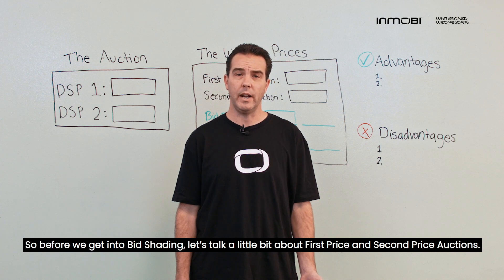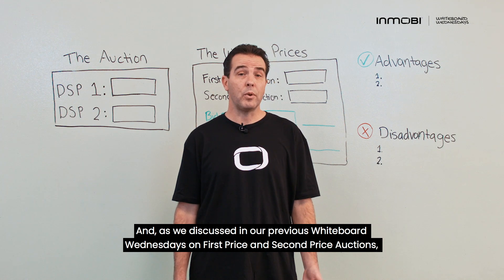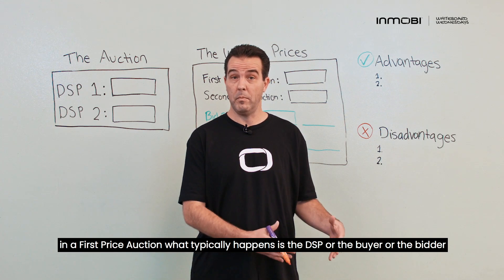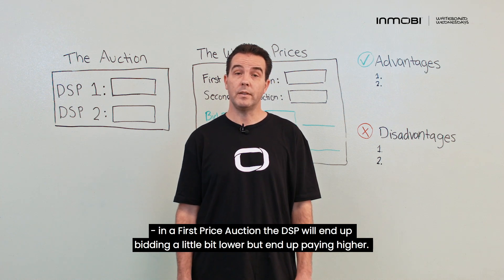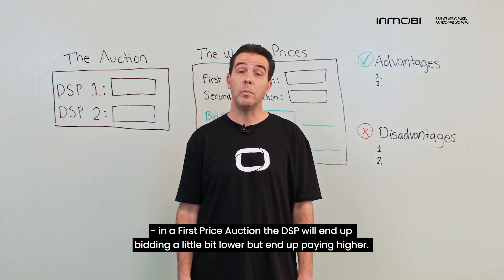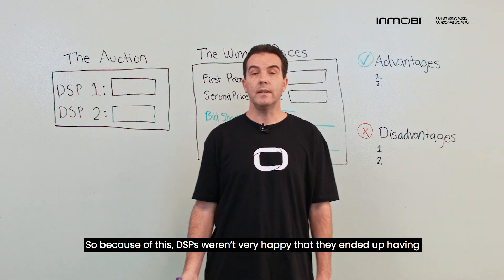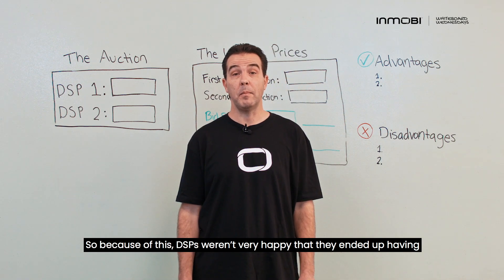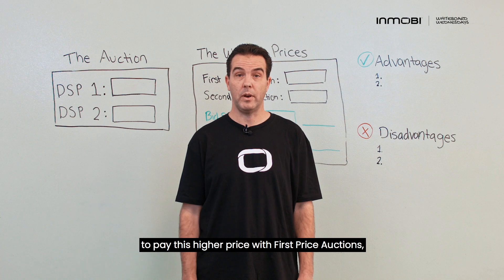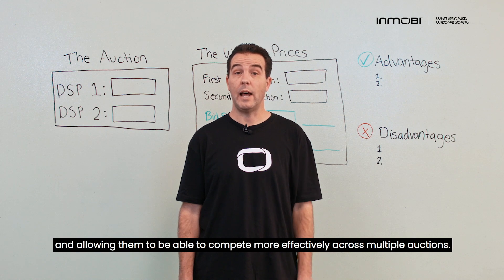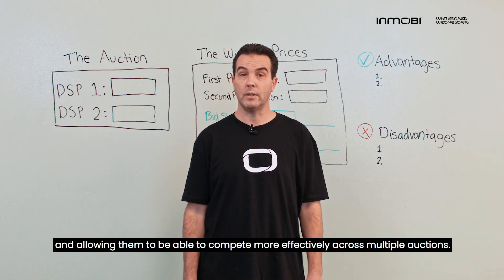Before we get into bid shading, let's talk a little bit about first price and second price auctions. As we discussed in our previous Whiteboard Wednesdays, in a first price auction the DSP — or the buyer or the bidder, they're all used synonymously — will end up bidding a little bit lower but end up paying higher, because they end up paying what they bid. DSPs weren't very happy having to pay this higher price, even though there were benefits such as removing lack of transparency and allowing them to compete more effectively across multiple auctions.